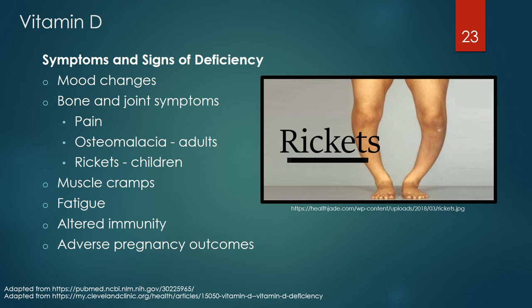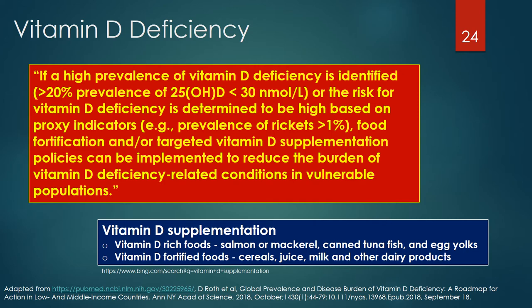Symptoms and signs of vitamin D deficiency include mood changes, bone and joint pain, osteomalacia or bone loss in adults, rickets in children, muscle cramps, fatigue, altered immunity that may manifest with increased respiratory tract infections, and adverse pregnancy outcomes. If a high prevalence of vitamin D deficiency is identified — greater than 20% prevalence of serum 25-hydroxyvitamin D below 30 nanomoles per liter, or prevalence of rickets greater than 1% — food vitamin D fortification and/or targeted vitamin D supplementation policies can be implemented.